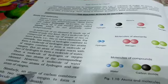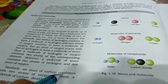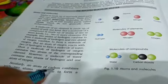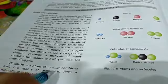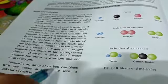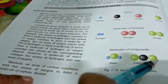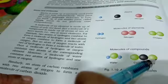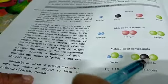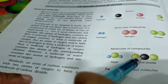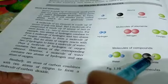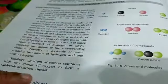Similarly, an atom of carbon combines with two atoms of oxygen to form a molecule of carbon dioxide. और ठीक उसी तरीके से, अगर carbon dioxide का एक molecule बनता है, तो उसमें एक atom carbon का होता है, जबकि oxygen के दो atoms होते हैं।